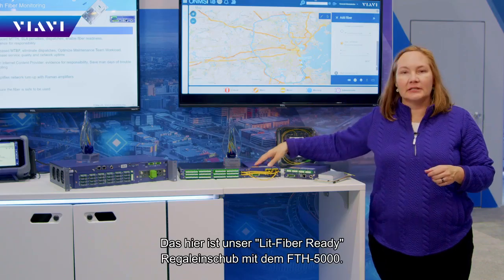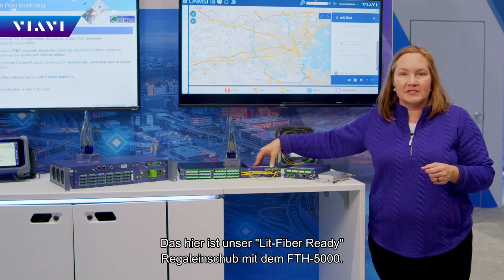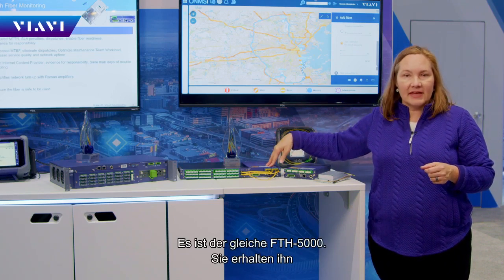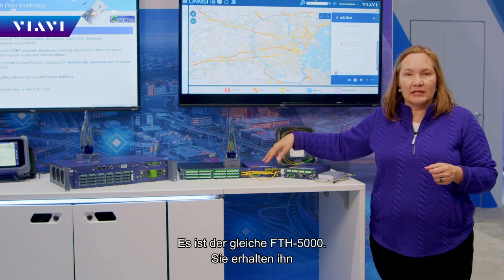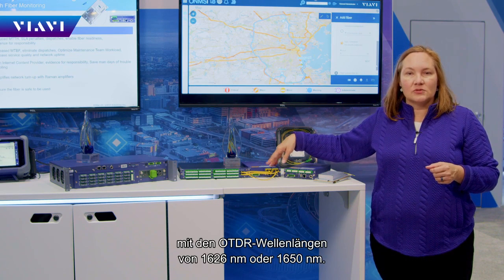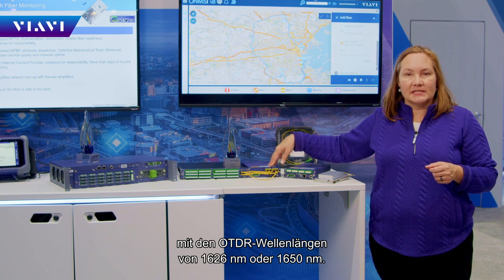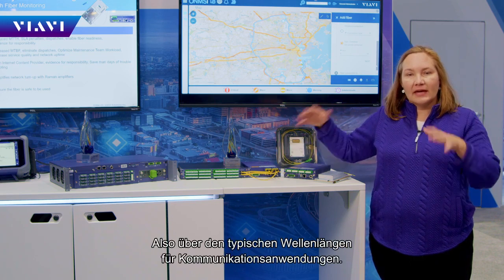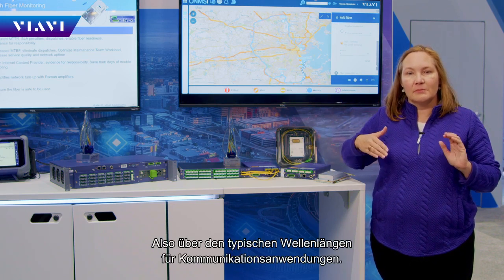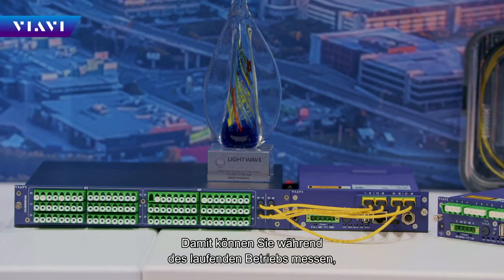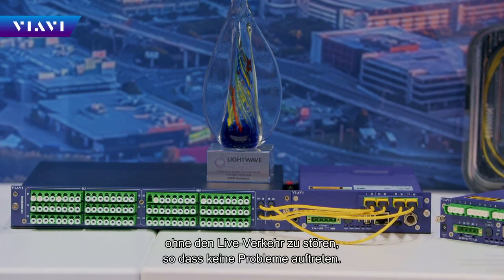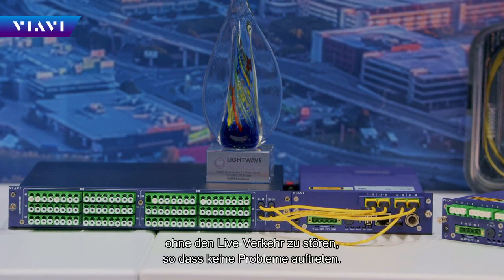This is our lit-fiber ready shelf with the FTH 5000 in it. The OTDR wavelength ranges are 1626 or 1650 nm, which is above the typical communications lambda. That allows you to shoot into live traffic without disturbing or interfering with it.